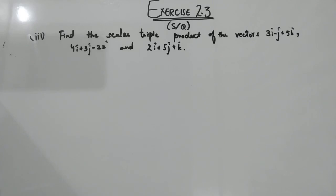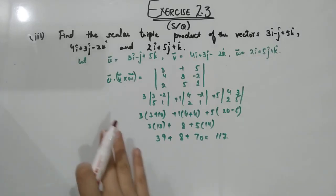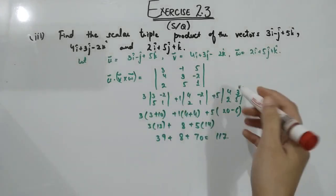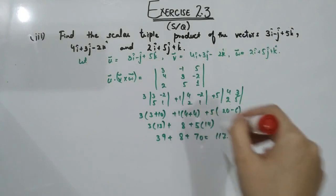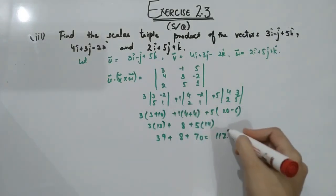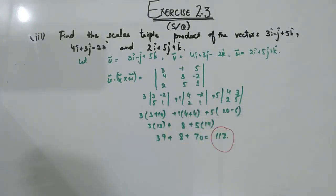In part number three, you have to find the scalar triple product of three given vectors. Let them be U, V, and W, and find the scalar triple product using the determinant method. Expanding and simplifying the determinant gives the final answer of 117.